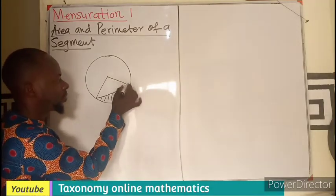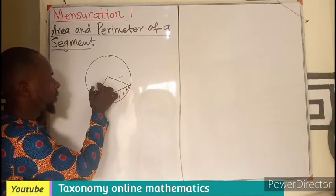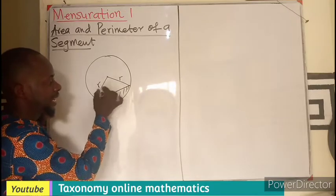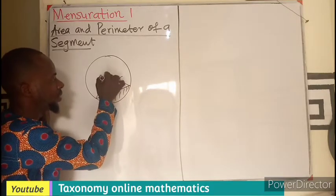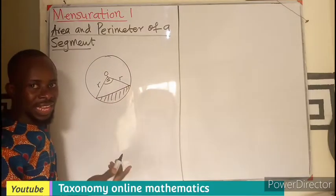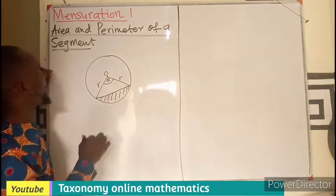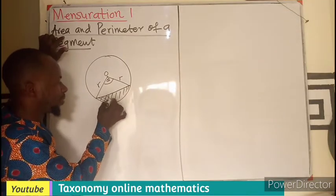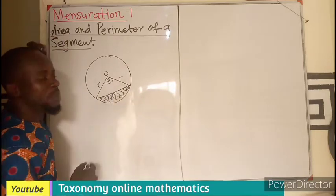Now, in drawing this, we know this is the radius. This will be radius as well. And the two radius will, by all means, incline an angle at the center. We said, first, finding the area. Meaning, we are looking for the space that this occupies.